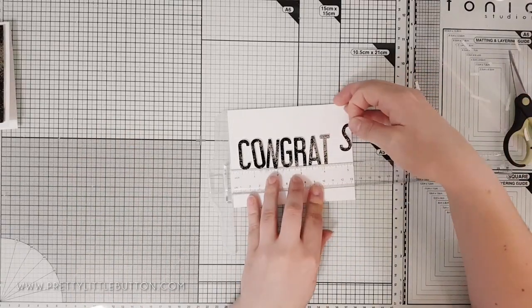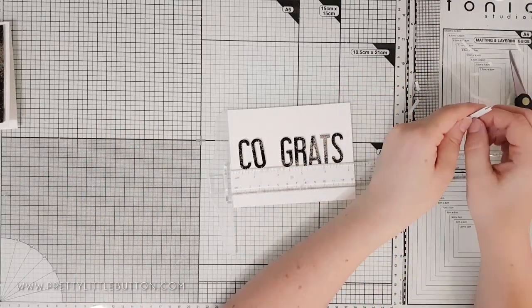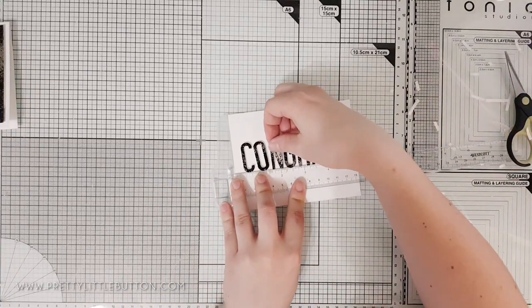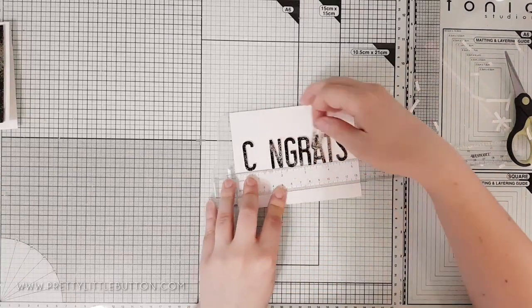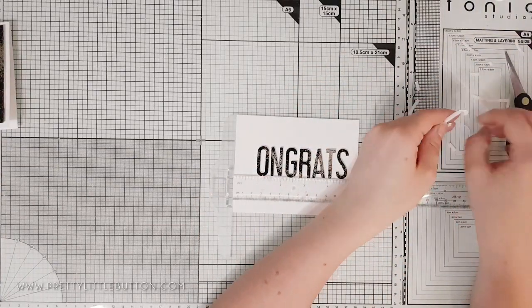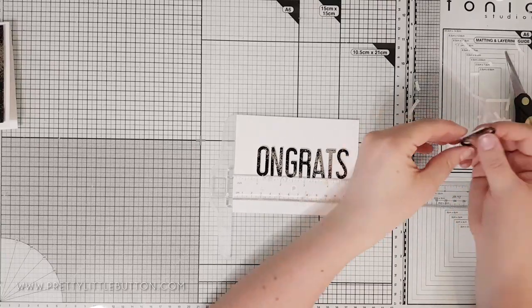For the die cut letters I'm using my T ruler to align the letters up straight on a white card panel and using thin foam strips from Diaries to adhere them on for some dimension. And this card panel was trimmed down to have an eighth of an inch border and adhered onto a white card base.